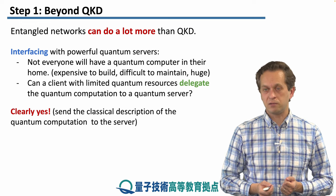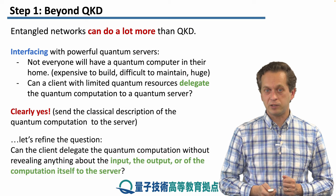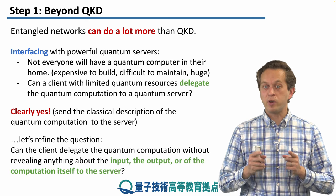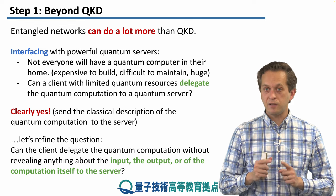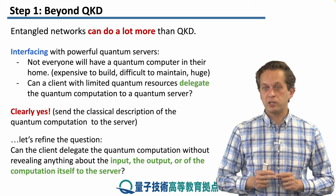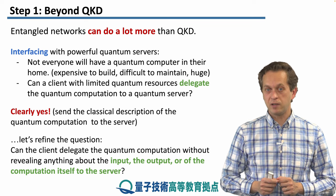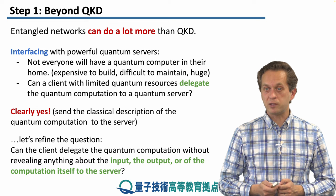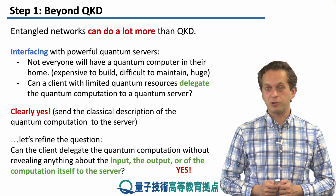But this is a trivial situation, so let's refine the question a little bit. Can the client delegate the quantum computation without revealing anything about the input, the output, or the computation itself to the server? This is a much tougher scenario, and it turns out that using quantum networks and quantum technologies this is in fact achievable. We're going to learn about the basics of how to do it.